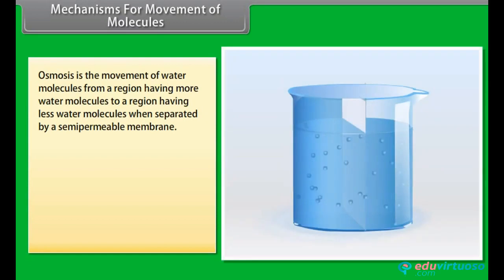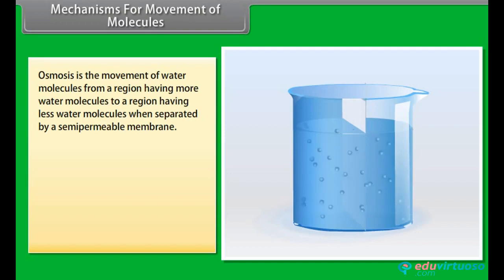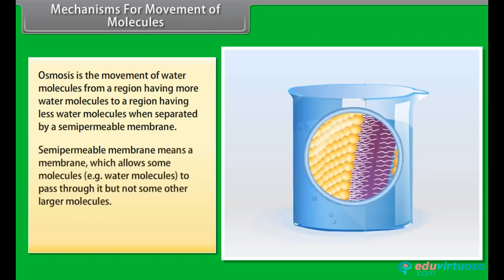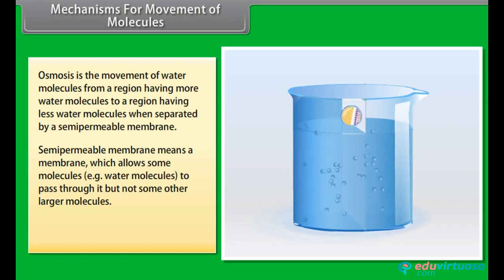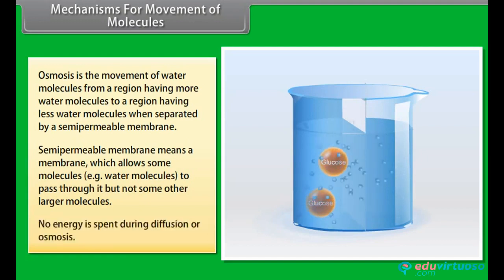Osmosis is the movement of water molecules from a region having more water molecules to a region having fewer water molecules, when separated by a semi-permeable membrane. A semi-permeable membrane is a membrane which allows some molecules — i.e., water molecules — to pass through it, but not some other larger molecules.